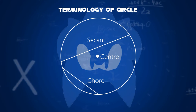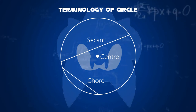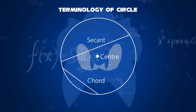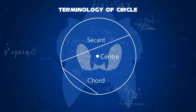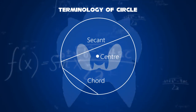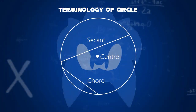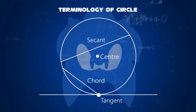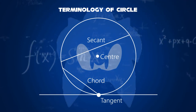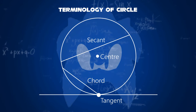Fifthly, if the chord is extended but not approaching to its diameter, a coplanar straight line intersecting a circle in two points — this is called a secant. Sixth, a coplanar straight line that has one single point in common with a circle is therefore called a tangent.